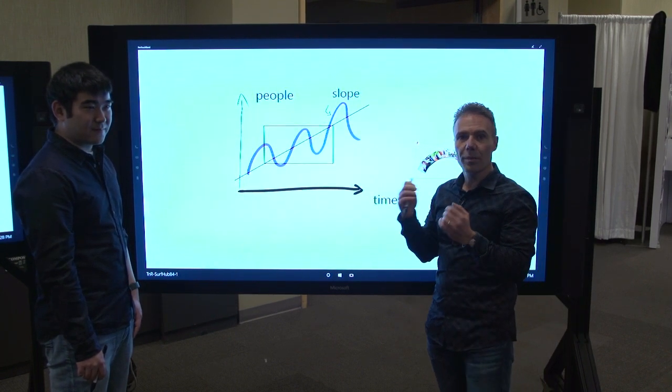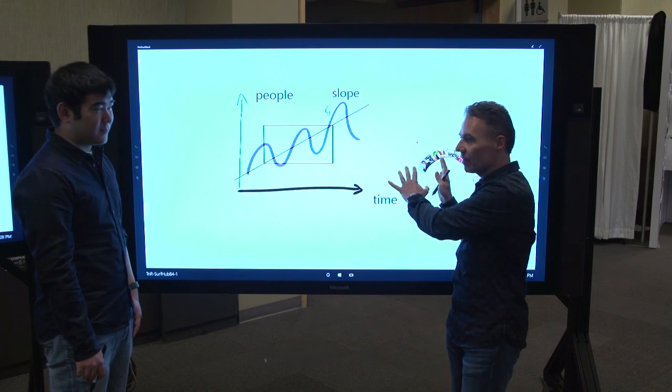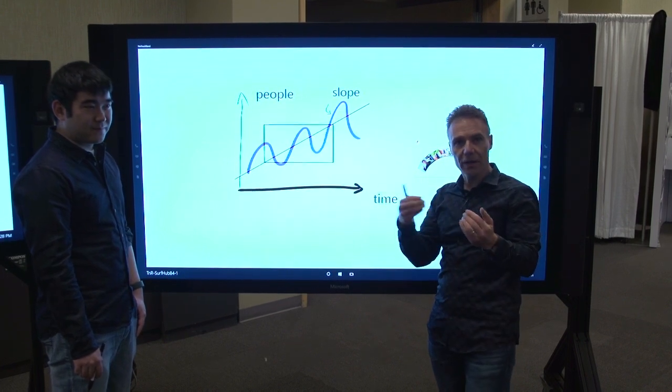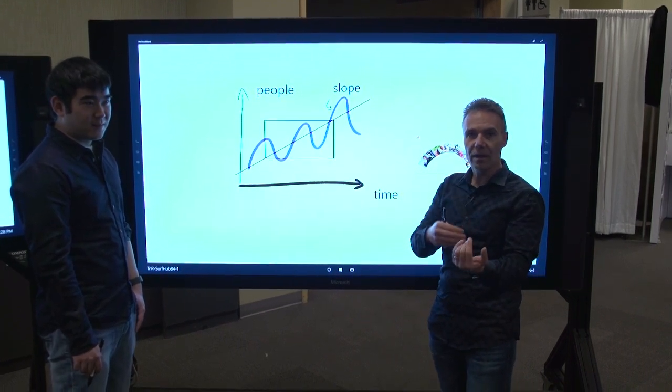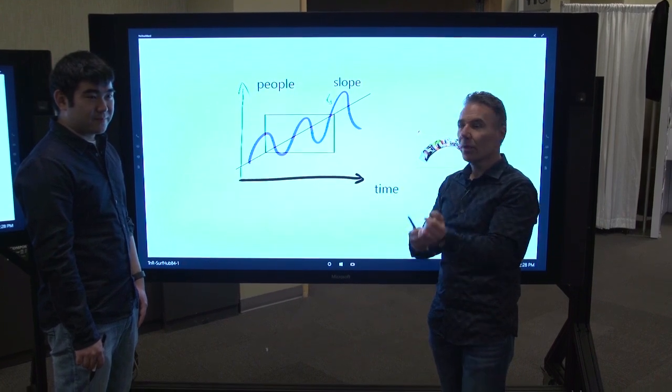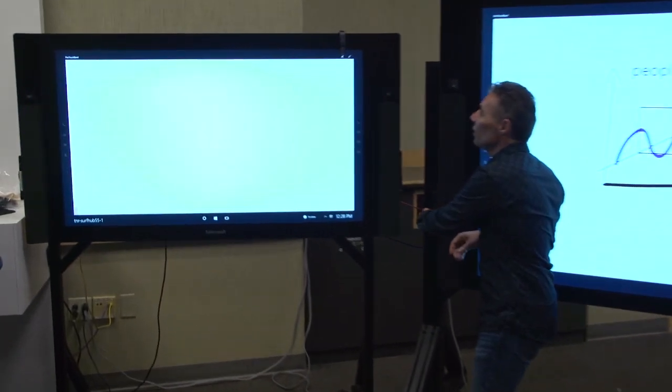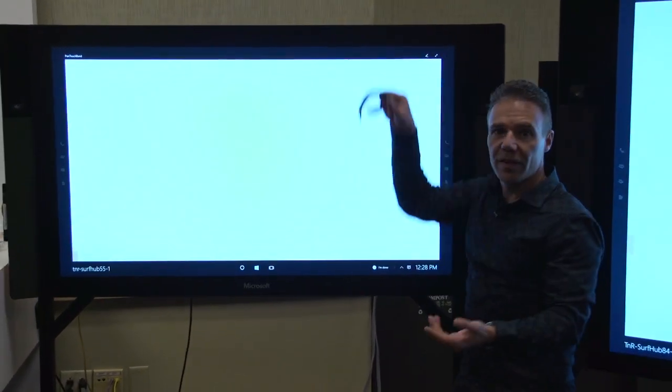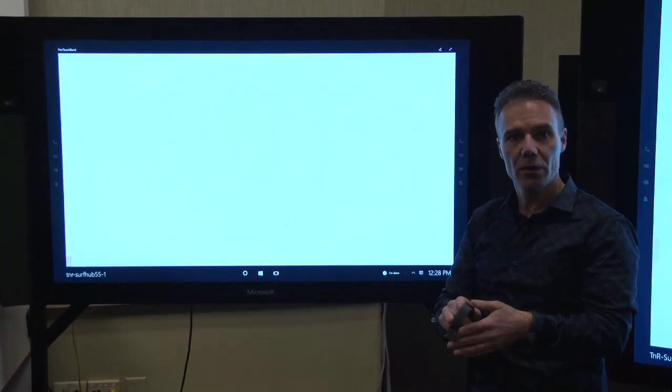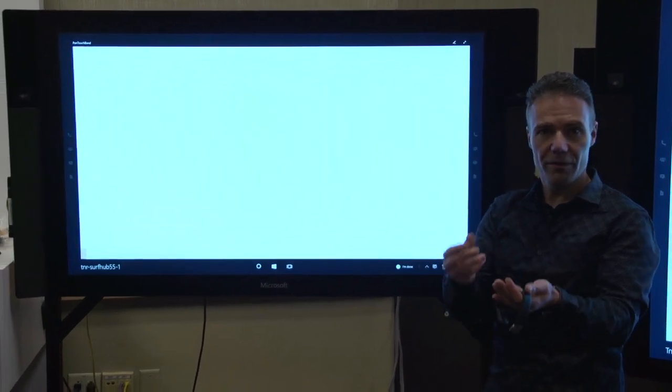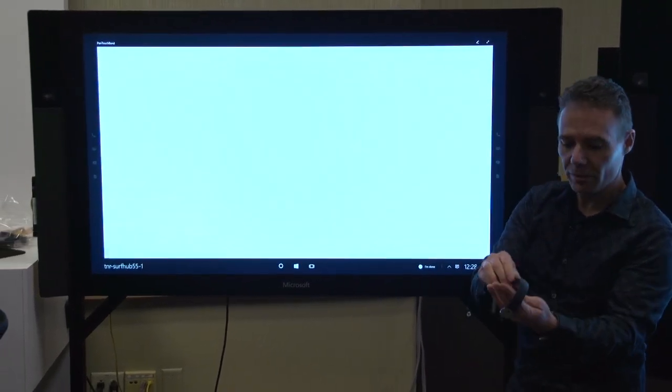But then what we thought is on top of that, instead of just using the band as an input, we can also be bidirectional, and also use the band as an output. So here, what we do is on top of giving you some information, knowing who you are, what we do is also to give you haptic feedback, for instance, when you change menu.